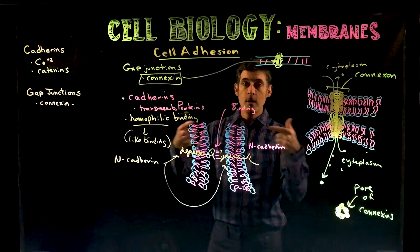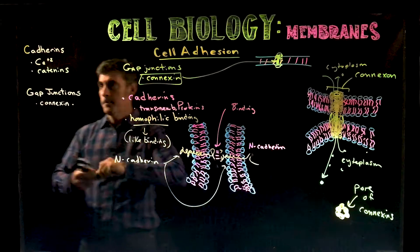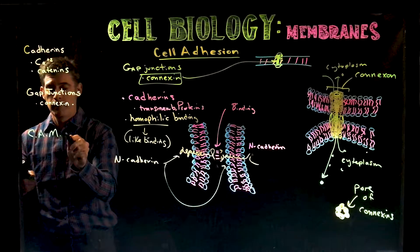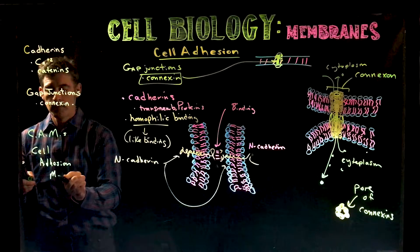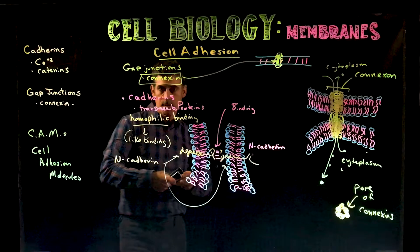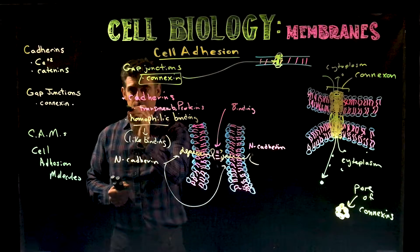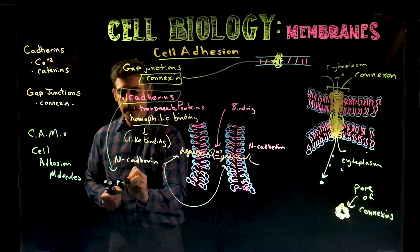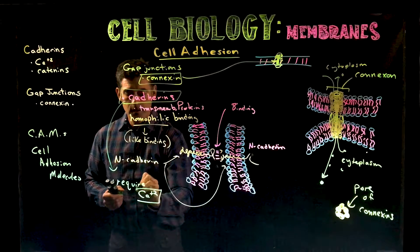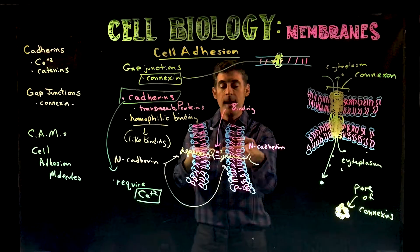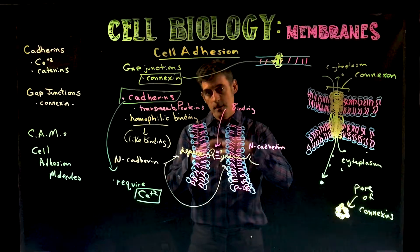Transmembrane proteins called cadherins join to other cadherins in other cell membranes that are like them. There are a variety of what we call CAMs — cell adhesion molecules — that function in a similar way. A few more interesting things about cadherins: cadherins require calcium ions to be present. If calcium ions are present, the cadherins can work and bind together; if there are no calcium ions, they cannot stick together.